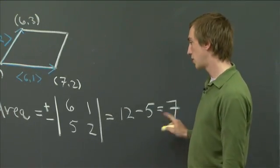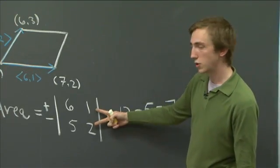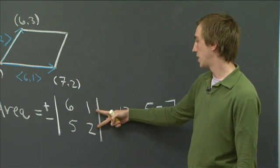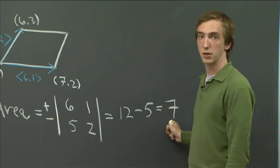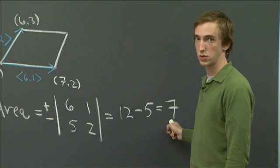Had we computed our determinant by transposing the rows here, then we might have found a negative 7. And of course, we want our area to be positive, so we would just choose 7.